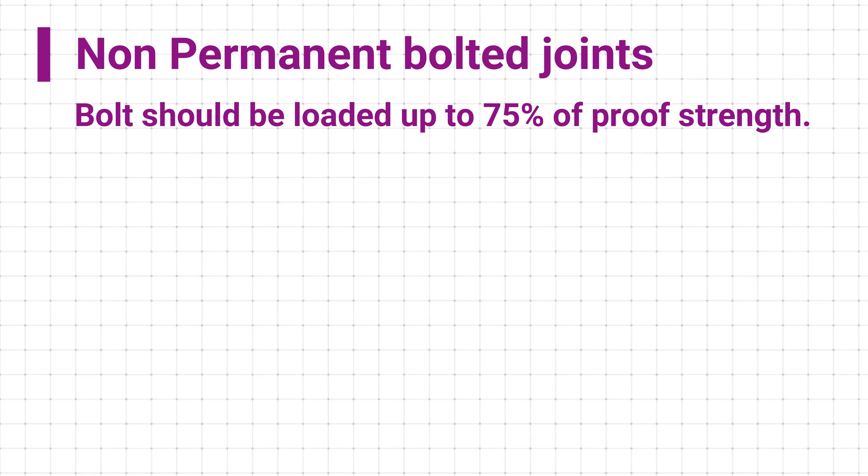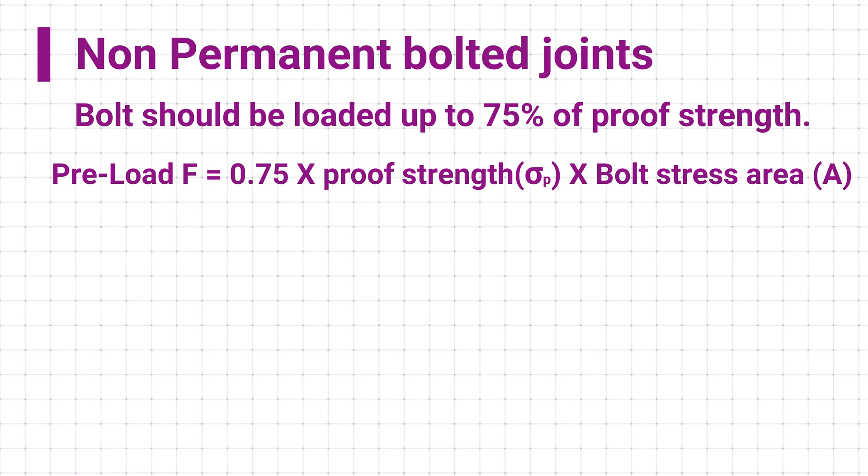So for non-permanent bolted joints, preload can be calculated as 0.75 times the proof strength multiplied by bolt stress area.